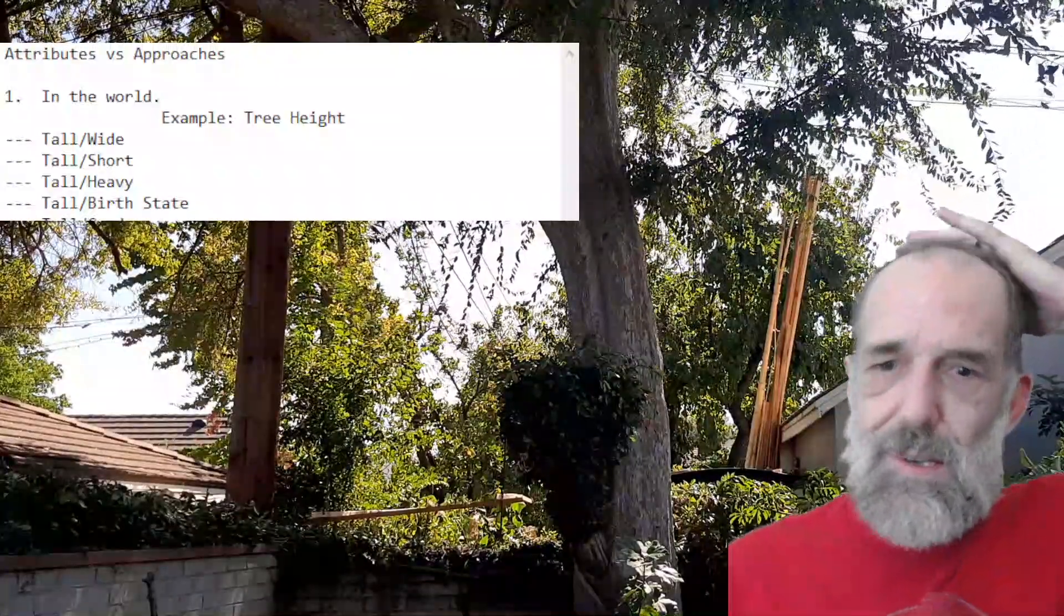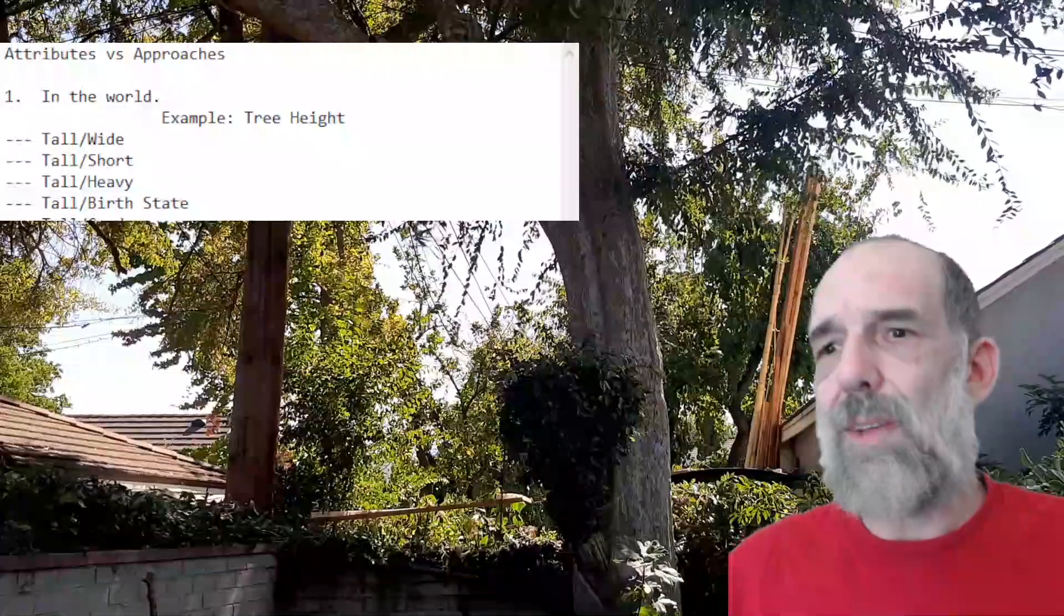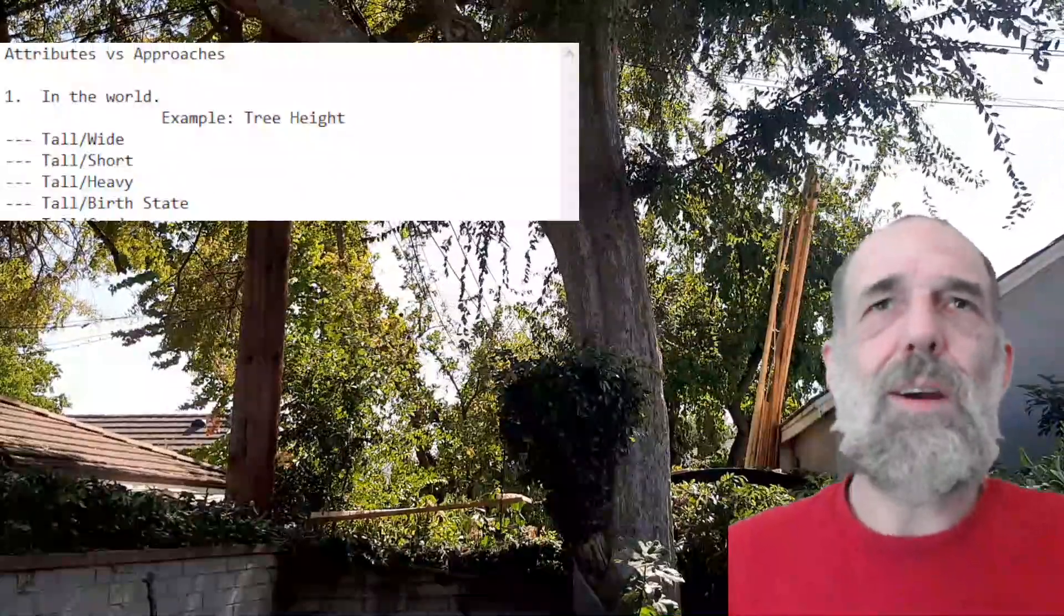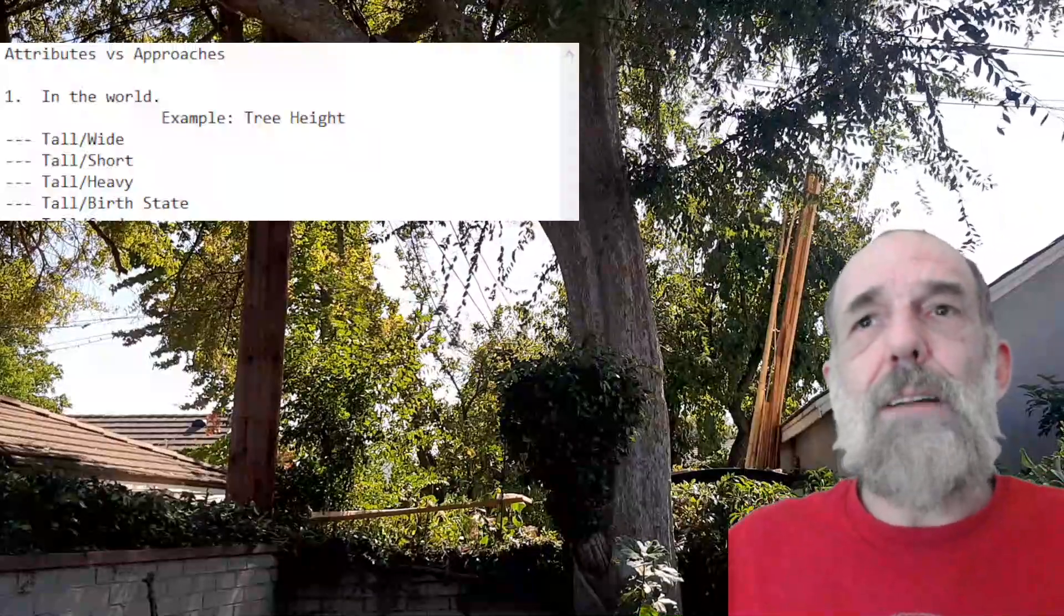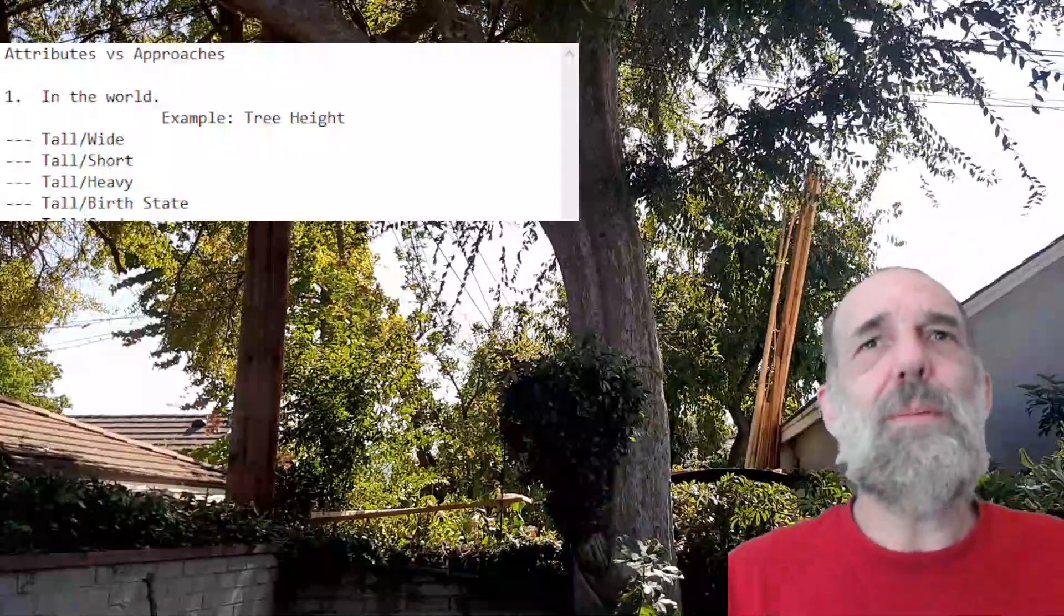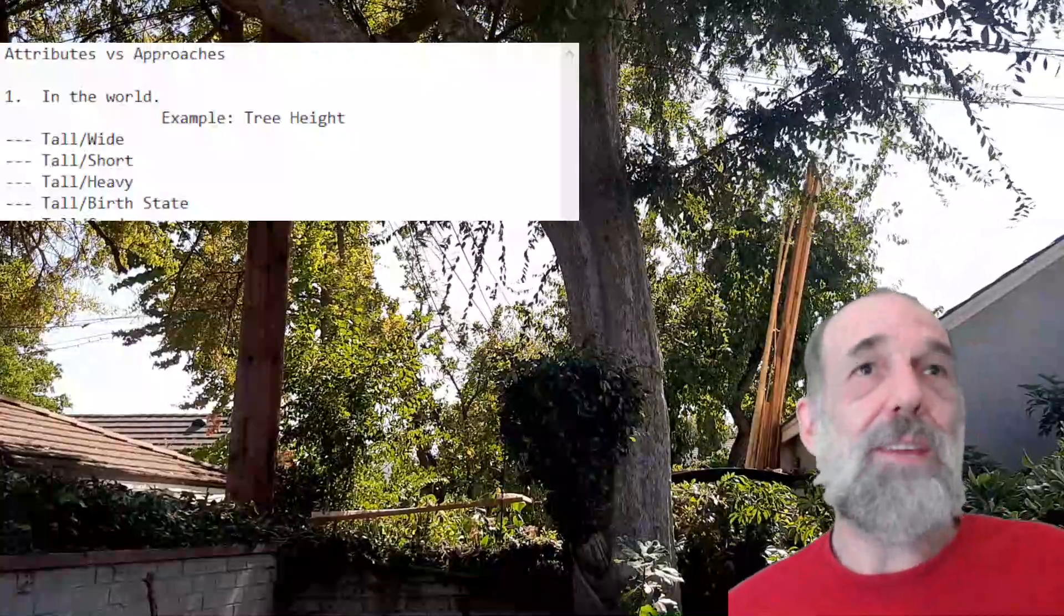Tall and birth state. So let's say each of these trees was born from seed in a nursery in one of the 50 states. It's unrelated. You might be able to find a correlation in the data because, for example, the gardeners in Rhode Island do an especially good job. But that wouldn't be linked to the state. It would be a mistake to say therefore if I grow trees in Rhode Island, my trees will be taller. So that would be a misleading link there, even if the data supports it.